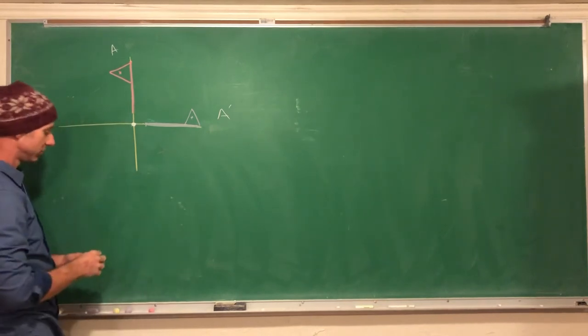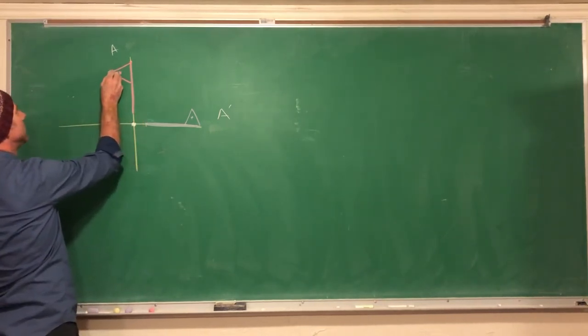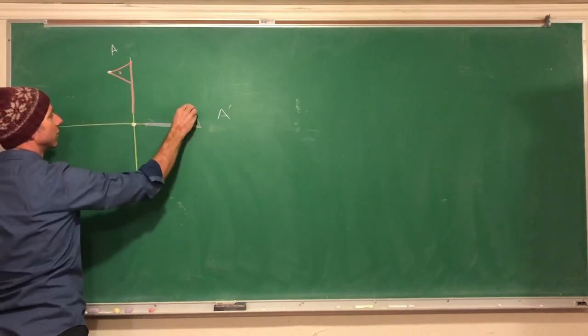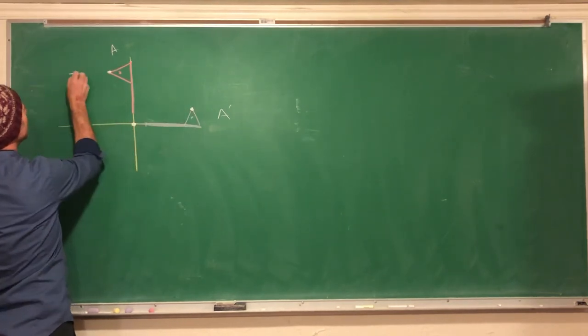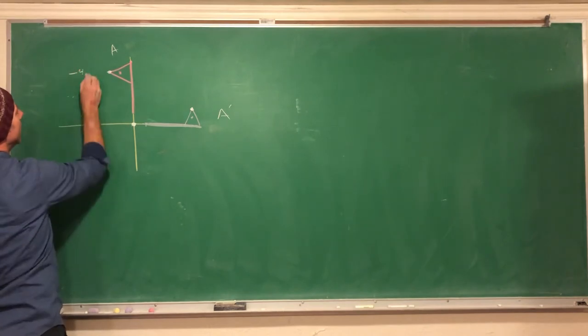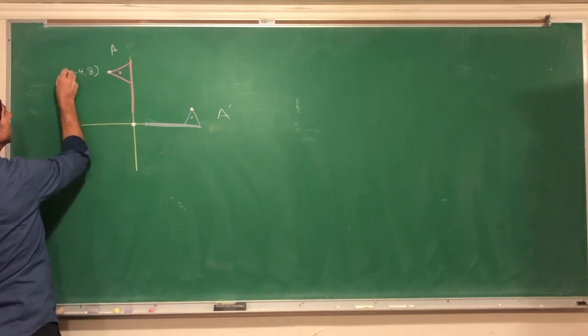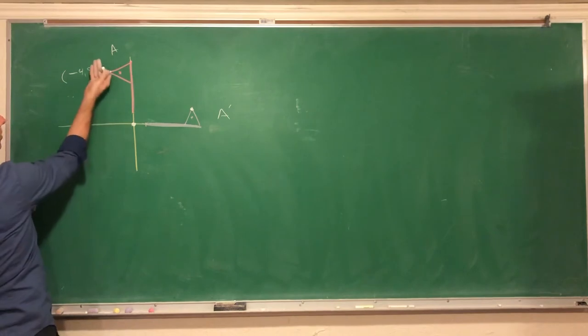To do that I need some points. Let's use this piece right here, the nose I guess we could call it. Let's call this one negative four and eight, so I went negative four, positive eight.